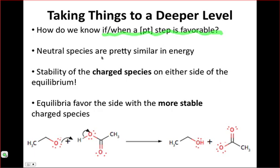The way chemists think about this is to make the observation that neutral species tend to be fairly similar in energy. Because they're neutral, there's not a lot strongly destabilizing or strongly stabilizing them. They're just kind of there.